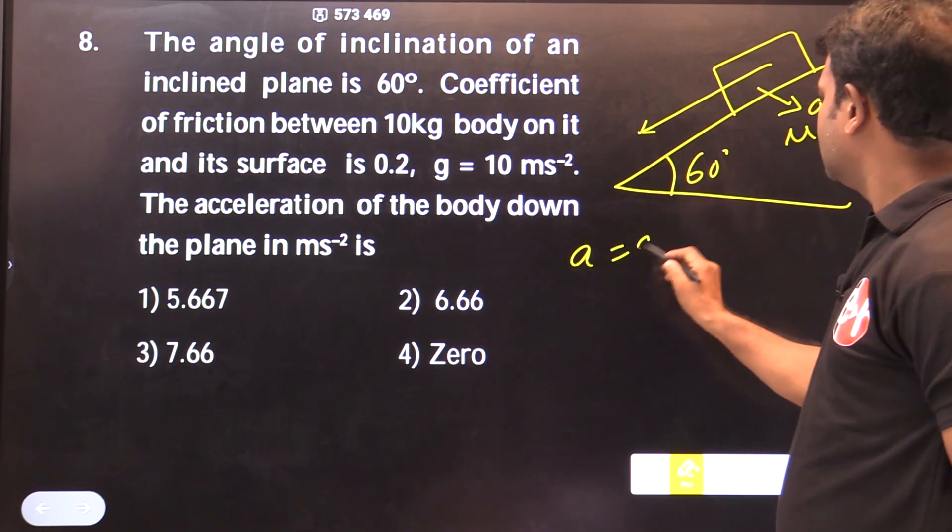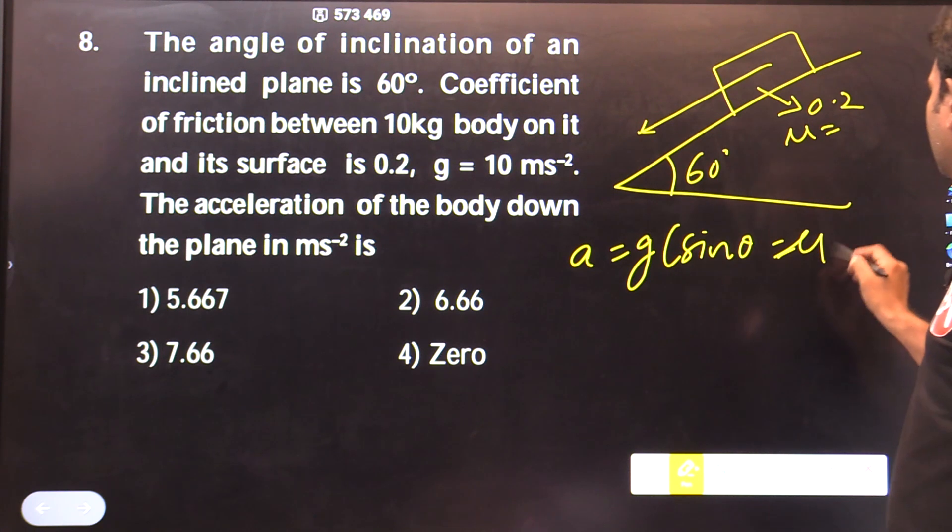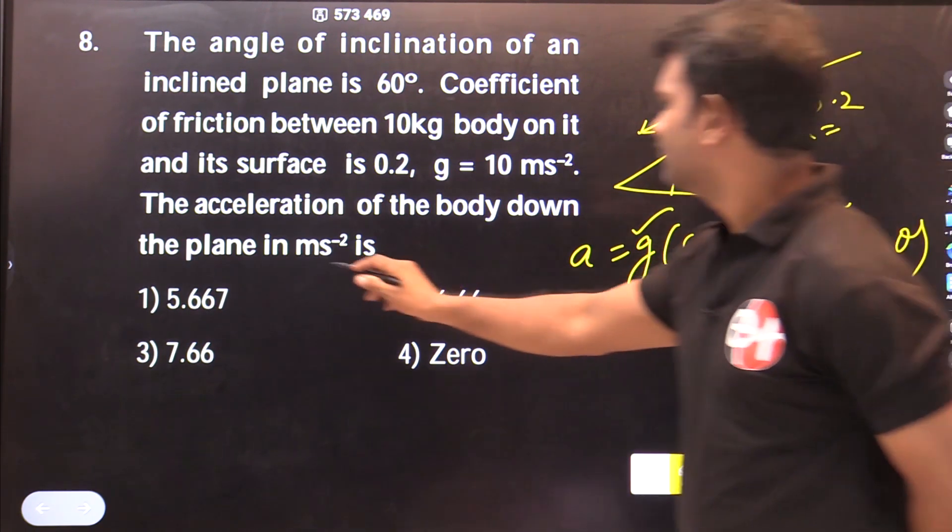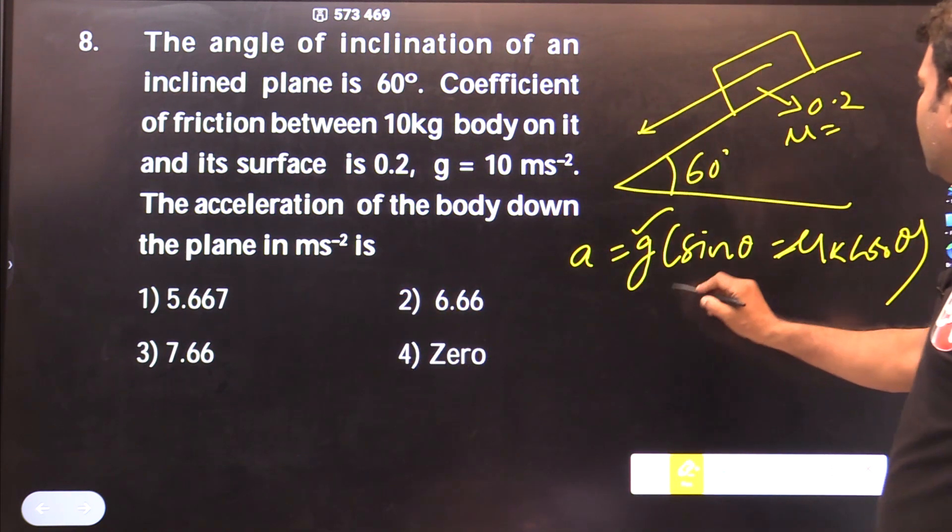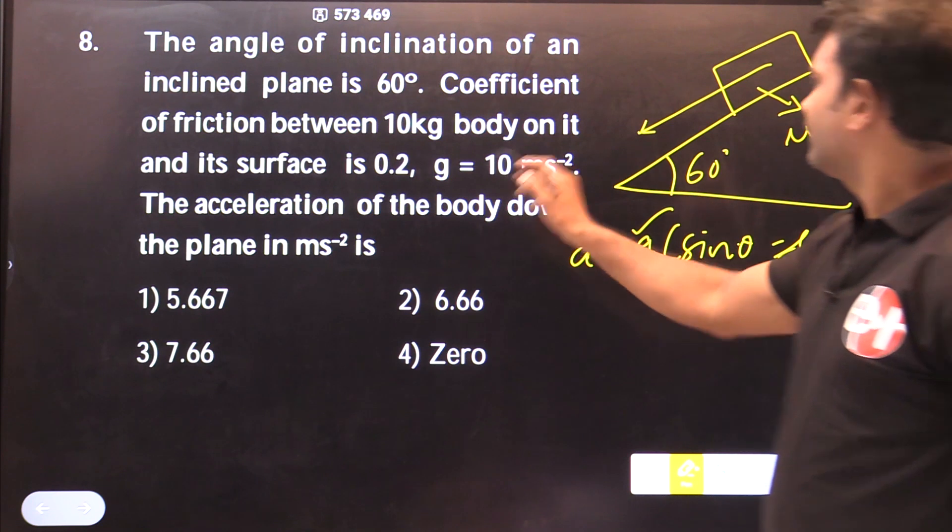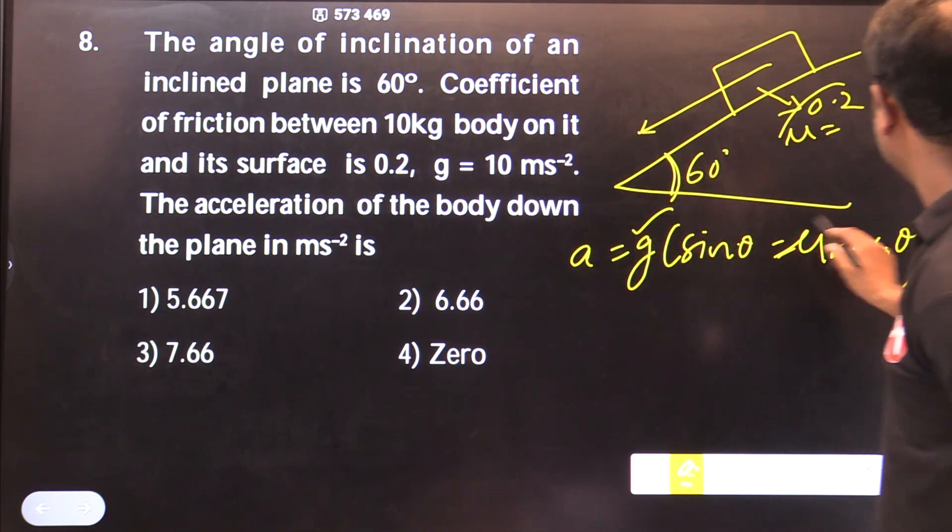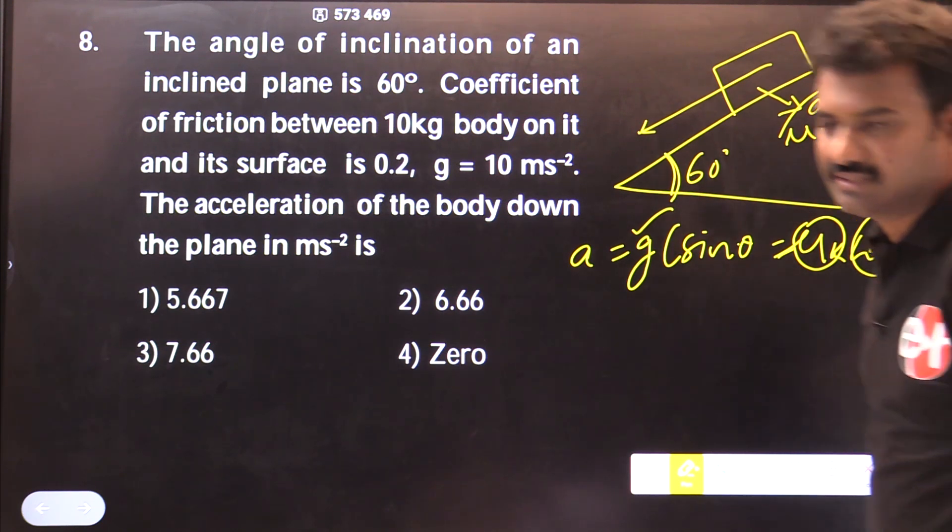So, the formula is equal to g times sin theta minus mu k cos theta. Take g equal to 9.8, sin theta tells you sin 60 minus mu k, mu itself is 0.2, cos theta cos 60. Substitute and simplify, we will get the answer.